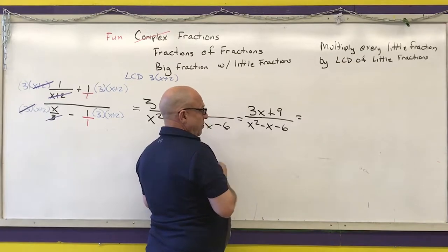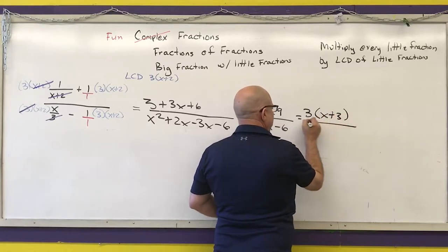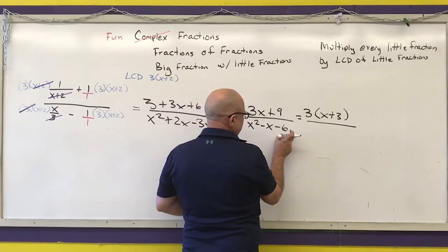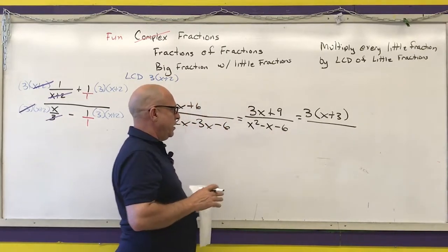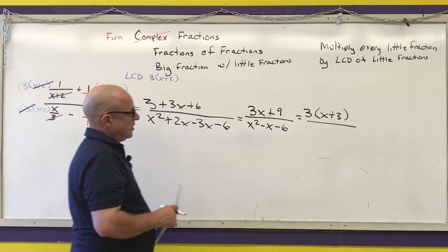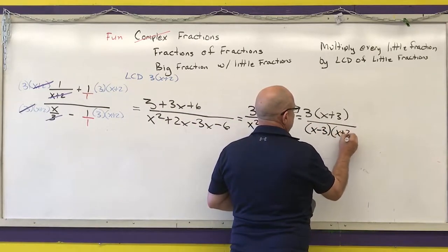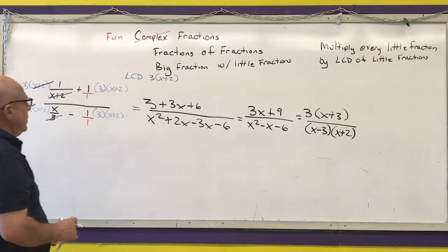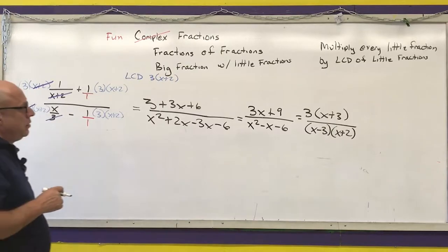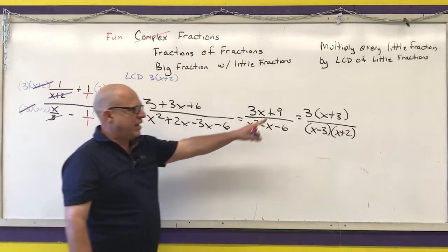Factor if at all possible. The numerator factors as 3 times x plus 3. For the denominator, I need two numbers that multiply to negative 6 and add to negative 1 — that would be x minus 3 times x plus 2. That is my final answer because nothing else cancels.